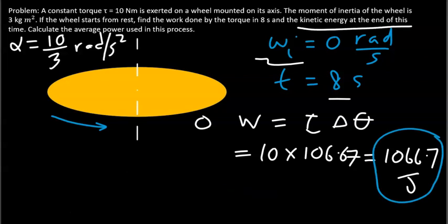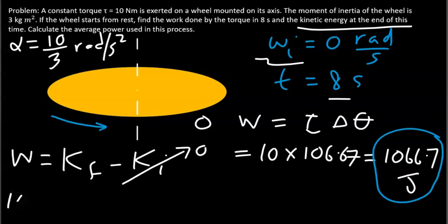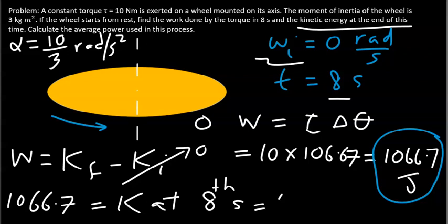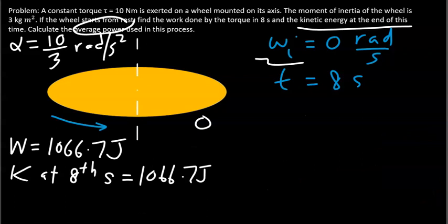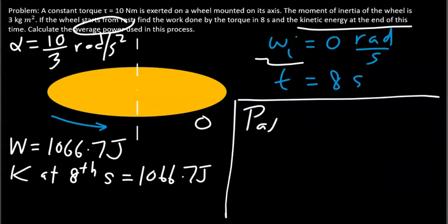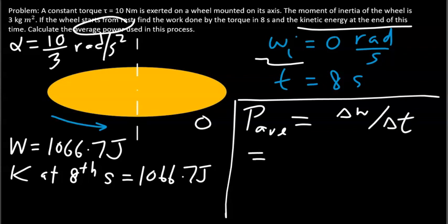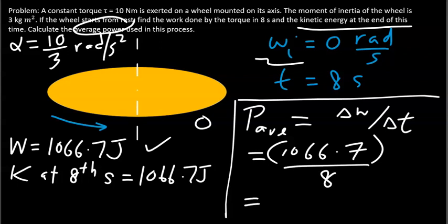Next, the kinetic energy at the end of 8 seconds. We know the work done equals the change in kinetic energy: final kinetic energy minus initial kinetic energy. Initially there is no rotation, so the initial kinetic energy is zero. Therefore the final kinetic energy also equals 1066.7 joules. For average power using the work method: work divided by time interval gives 1066.7 divided by 8, which equals 133.3 watts.